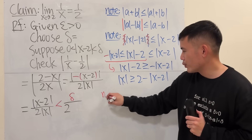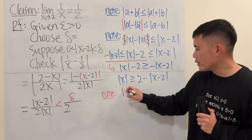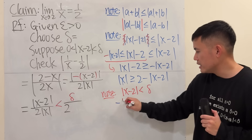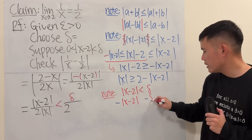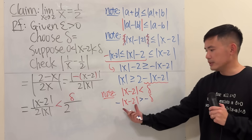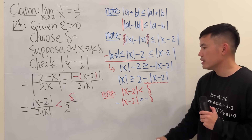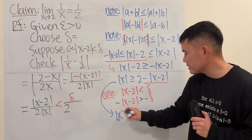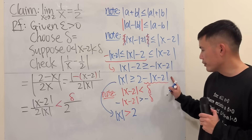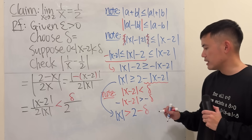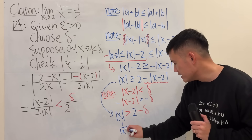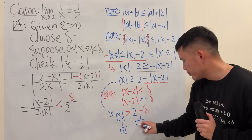Now we replace absolute value of x minus 2 with delta carefully, accounting for the negative. We know absolute value of x minus 2 is less than delta, so multiplying both sides by negative flips the inequality. Combining, this shows absolute value of x is greater than 2 minus delta. Taking the reciprocal on both sides now works in the right direction: 1 over absolute value of x is less than 1 over (2 minus delta).